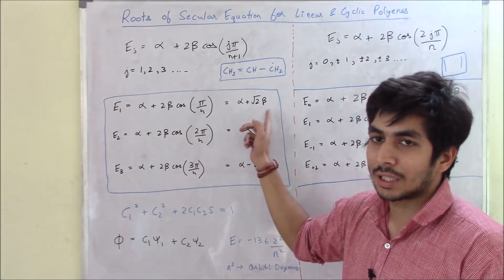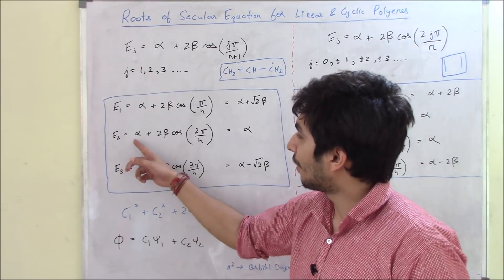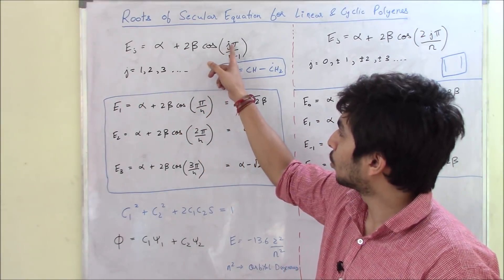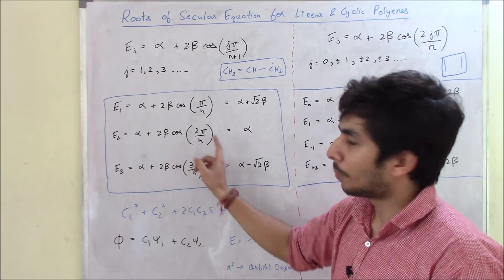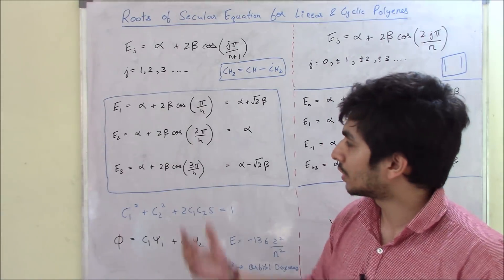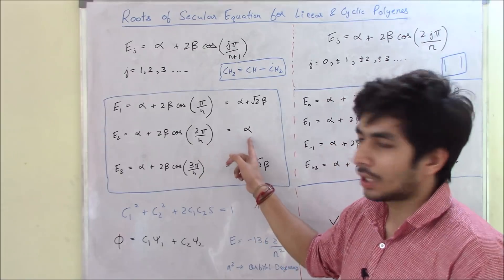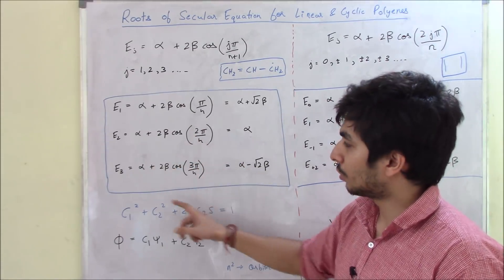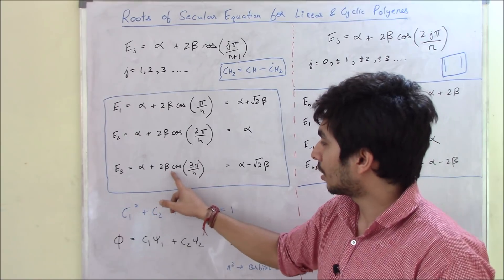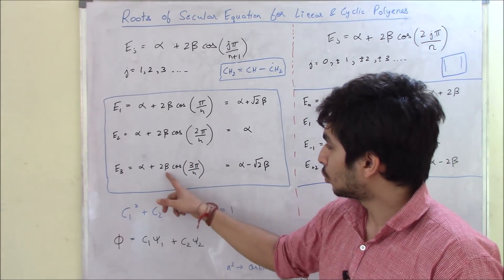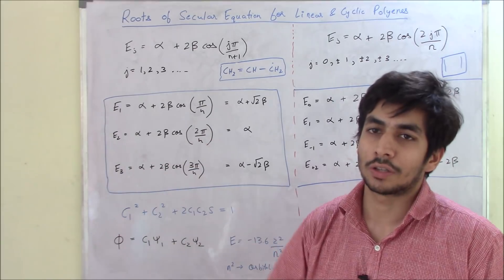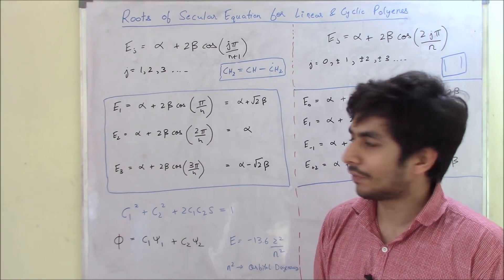For E2, j = 2: E2 = alpha + 2 beta · cos(2π/4) = alpha + 2 beta · cos(π/2). Cos 90° = 0, so the whole term becomes zero and E2 = alpha. For E3, j = 3: E3 = alpha + 2 beta · cos(3π/4). 3π/4 is 135°, which is in the second quadrant where cosine is negative.